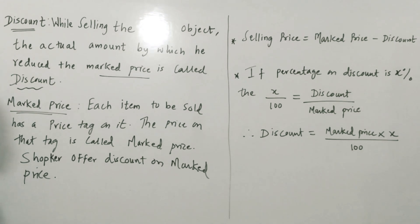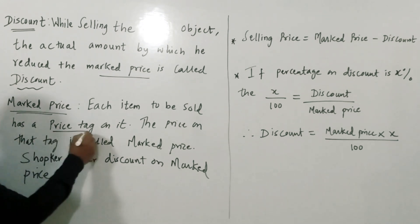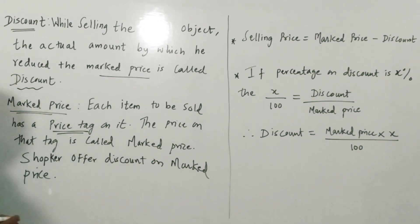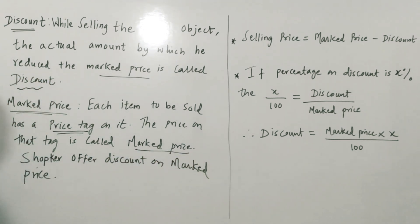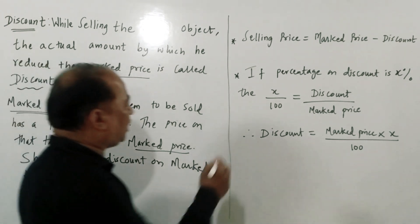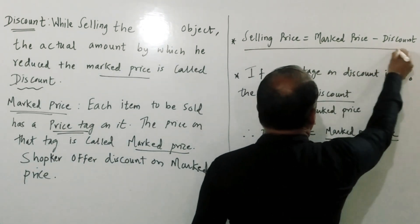So, what is mark price? Each item to be sold in the shop has a price tag on it. That price tag is called the mark price. The shopkeeper offers a discount on the mark price and sells the goods. So, the selling price is given by the formula, and we are going to use two important formulas.